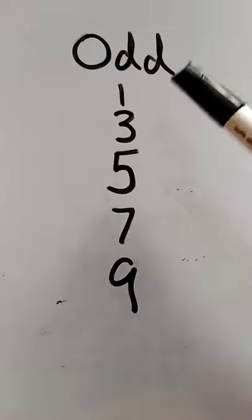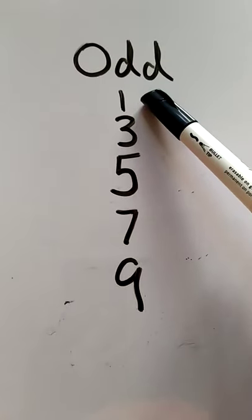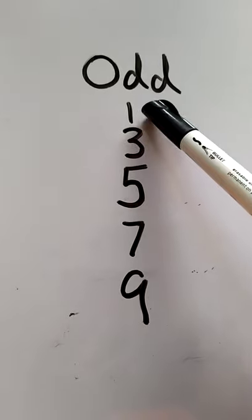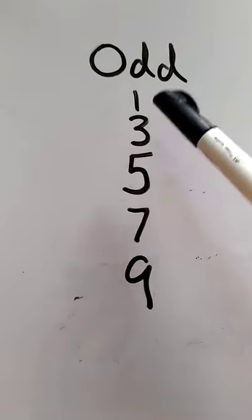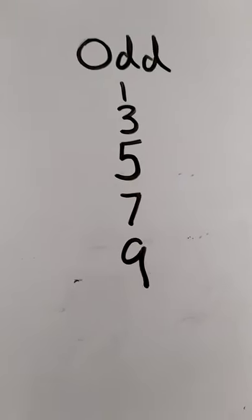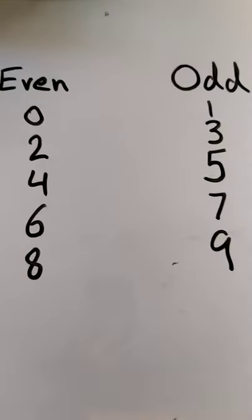Now look at the odd numbers. 1, if you want to divide one thing between two people, it will be very difficult. So 1 is odd number. Now 3 is odd, 5, 7 and 9. These are odd numbers. You have to memorize these numbers.